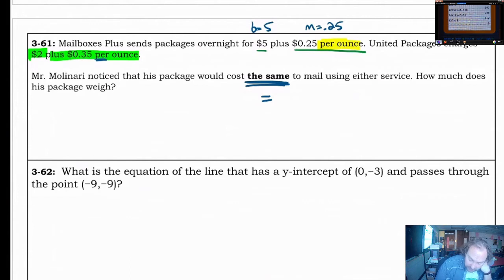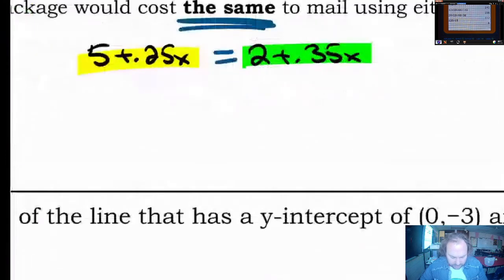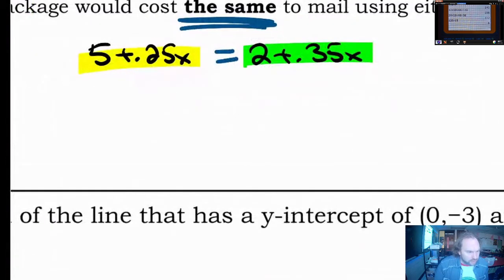The same means we're going to be putting an equal sign down and we're going to put expressions on both sides. The mailbox's plus is going to be 5 plus .25x. That's going to be the first cost. The other company, United Packages, is going to be kind of the same idea. It's $2 plus .35x. So 2 plus .35x. Now we're going to solve this like a standard algebra problem. So at this point, I'm going to zoom in.